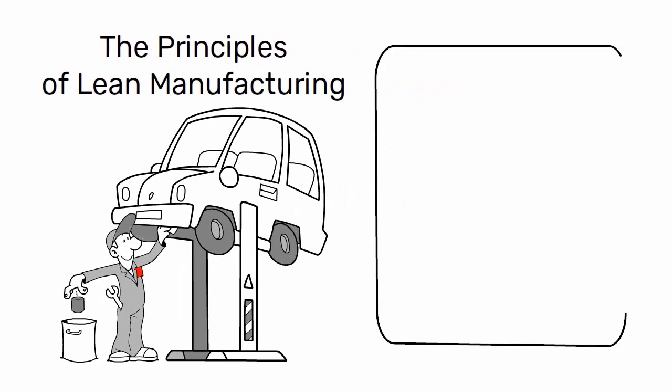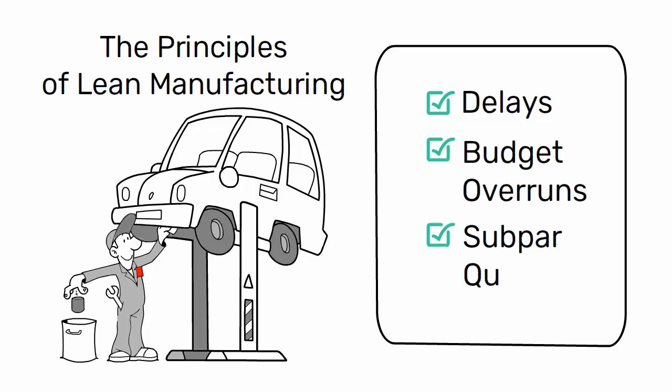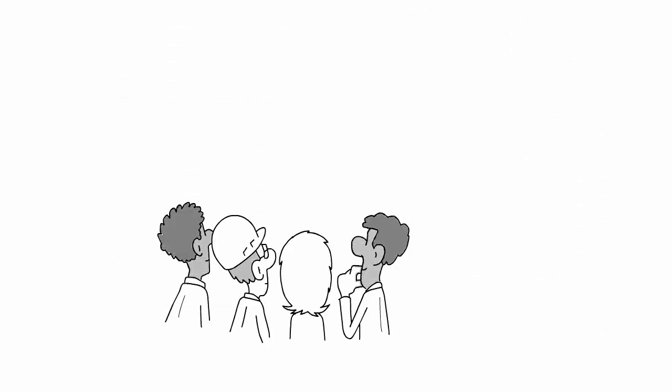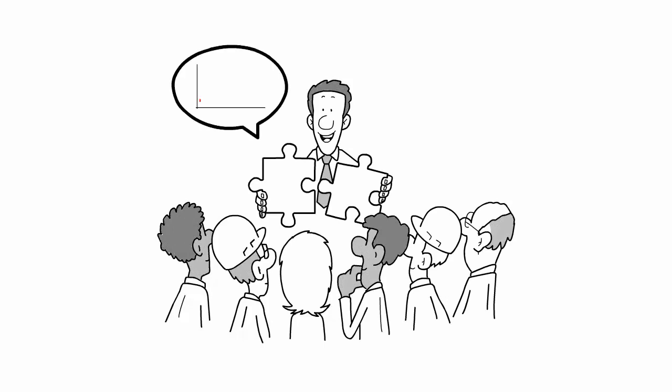In traditional construction, projects often suffer from delays, budget overruns, and subpar quality. Lean construction aims to solve these problems by focusing on continuous improvement and maximizing value for the customer.